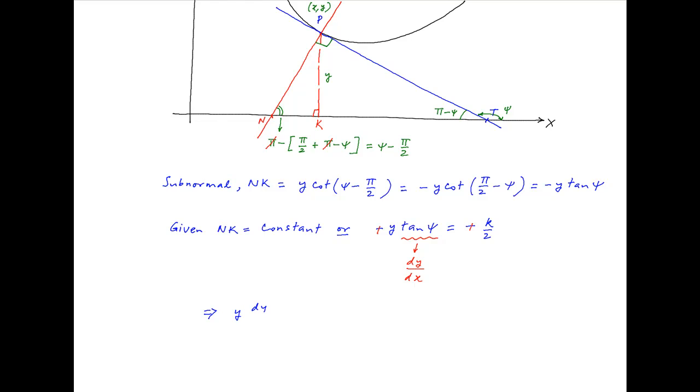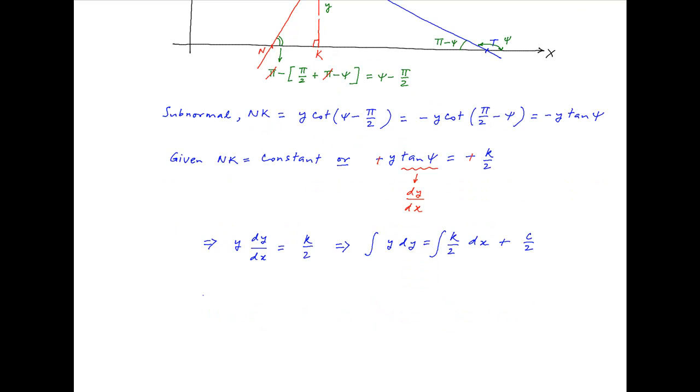And therefore, we have the differential equation y times dy/dx is equal to k/2. Separating the variables, we get y dy is equal to k/2 times dx. Integrating both sides and introducing a constant of integration, say c/2 on the right-hand side, we get y²/2 is equal to kx/2 + c/2. Two cancels across the left-hand side and the right-hand side, and the equation of the curve is y² = kx + c.